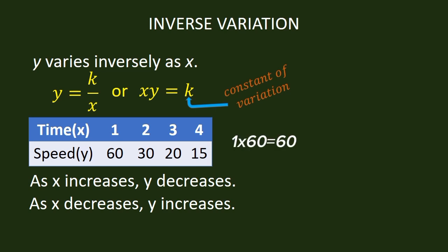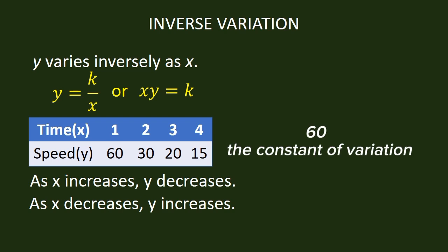So we have 1 times 60 is 60, 2 times 30 is 60, 3 times 20 is 60, and 4 times 15 is 60. So 60 is called the constant of variation.